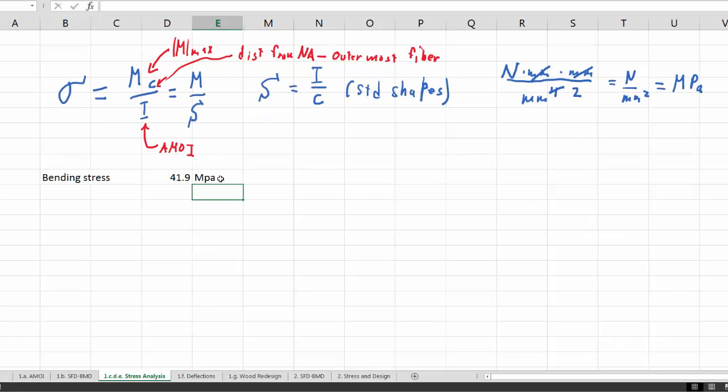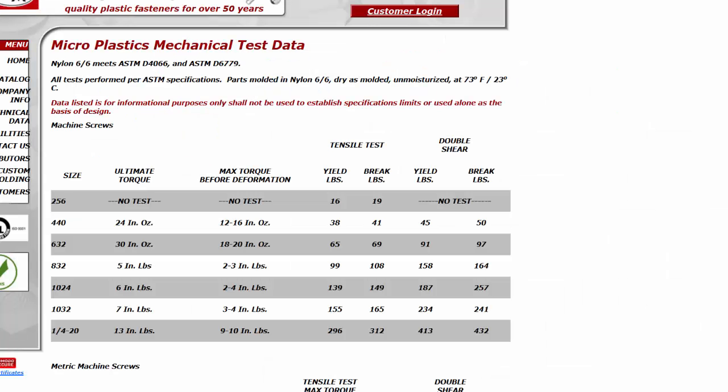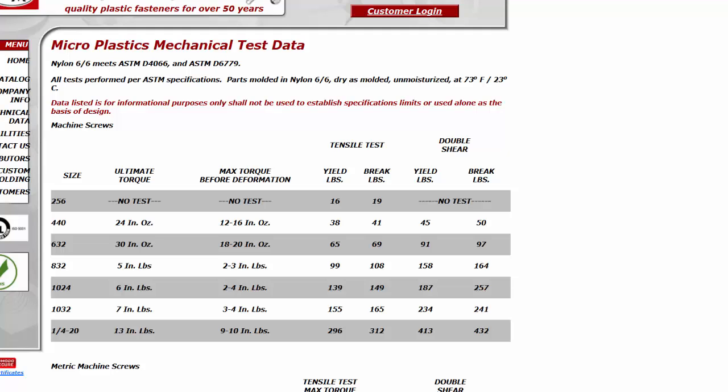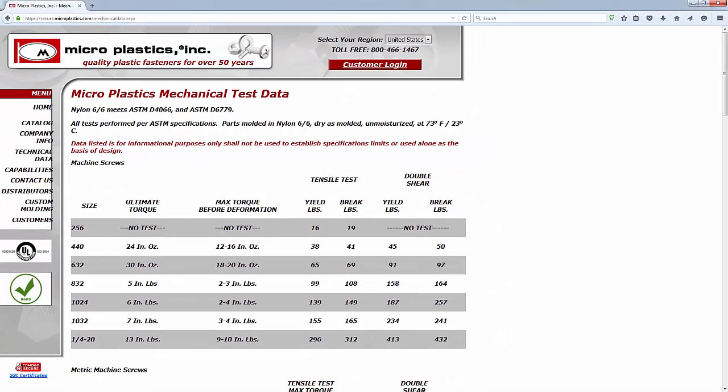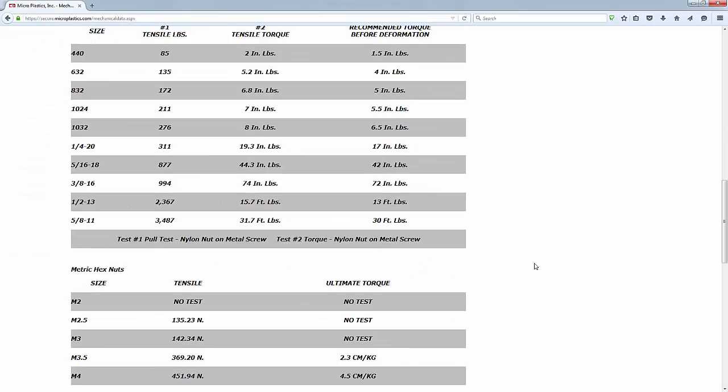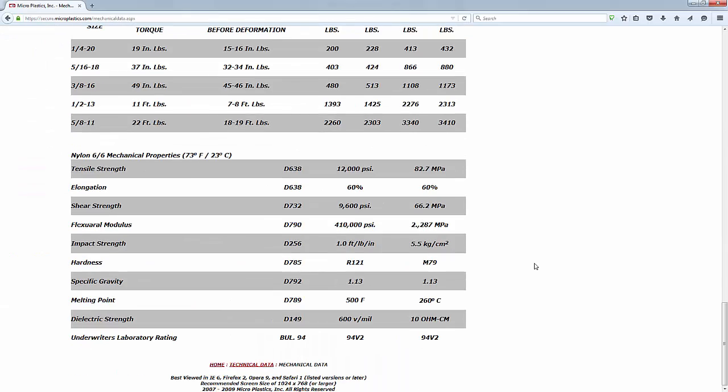The next step is to find a design factor based on tensile strength and a repeated load. Now, we are given that the material is nylon 6.6, and also given was this data from our friends at Micro Plastics, and they have a lot of great data on their plastic that they want to sell you. And here are the nylon 6.6 mechanical properties, tensile strength, elongation, shear strength, and so on at 73 degrees.